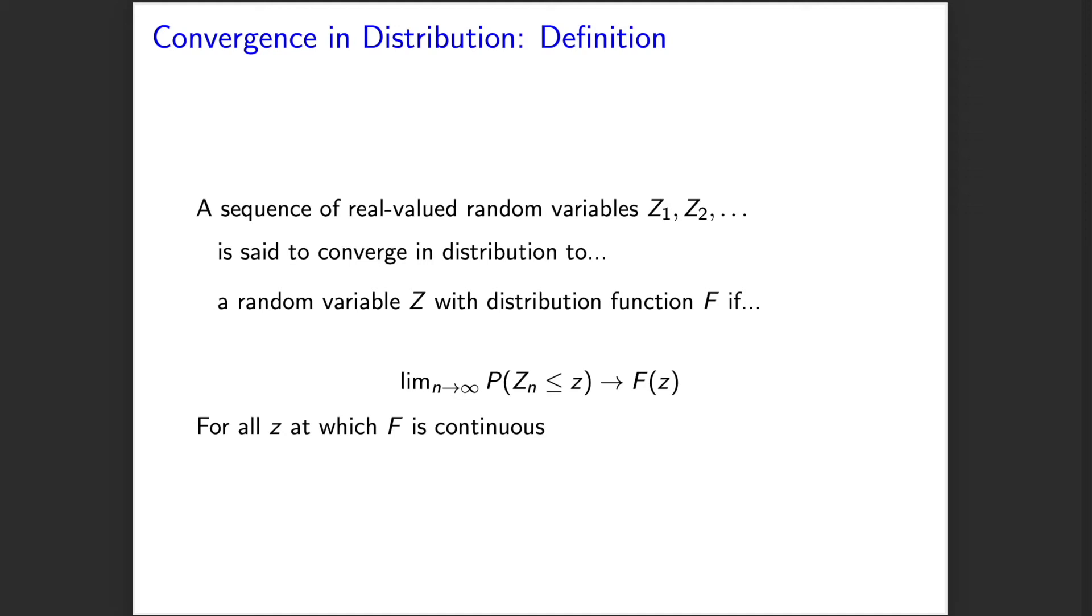This is also equivalent to saying we have convergence in distribution if the distribution functions of our Zₙ converge to the distribution function of Z everywhere that final distribution function is continuous. So let's look at a visual evaluation of this.